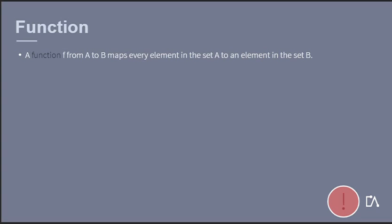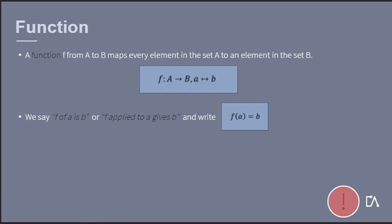A function between two sets A and B maps every element in A to an element in B. The idea of sending elements in A to B is illustrated by its mathematical notation. We say that f of a is b, or f applied to a gives b, and use the notation in the second box.